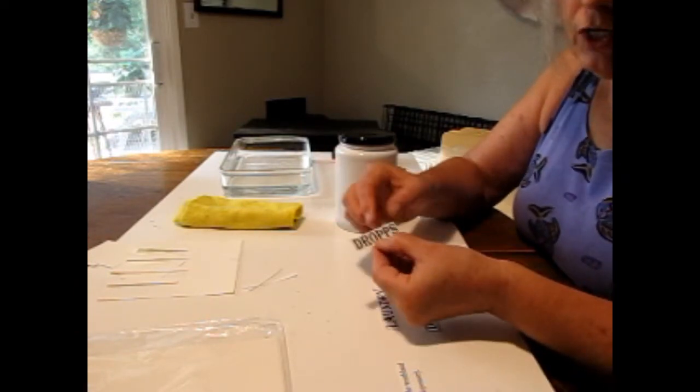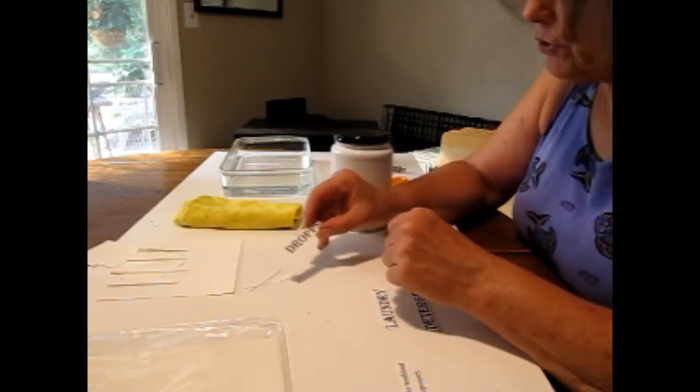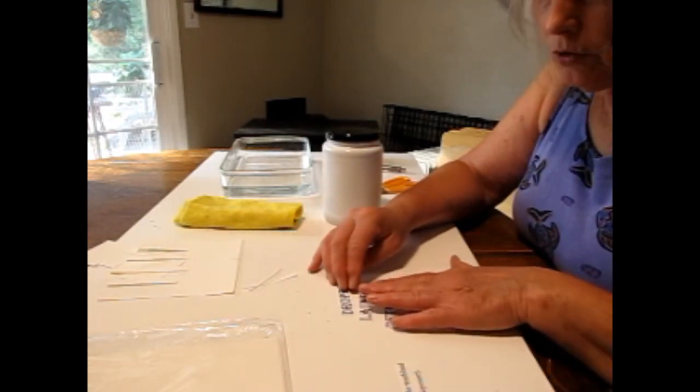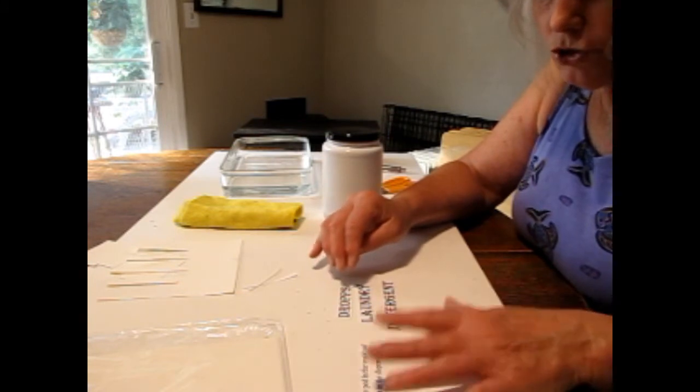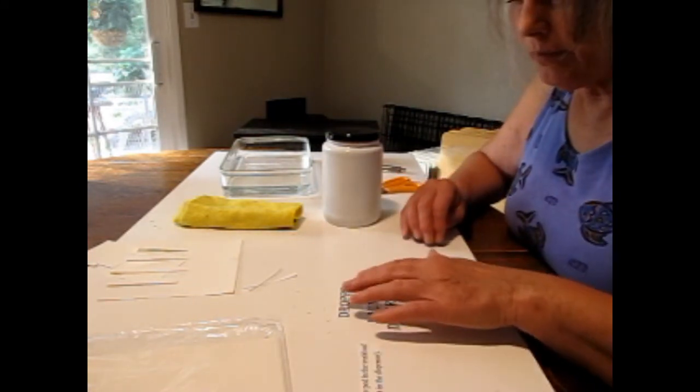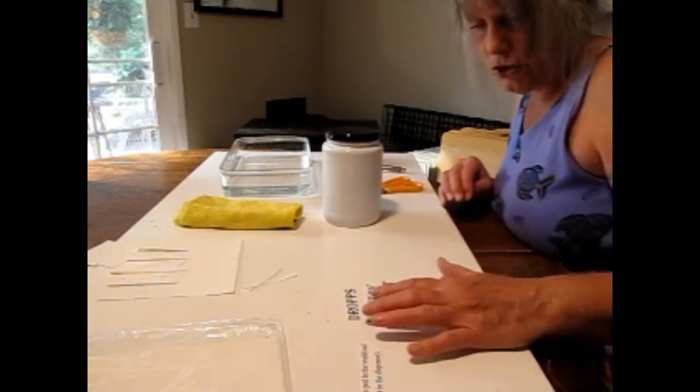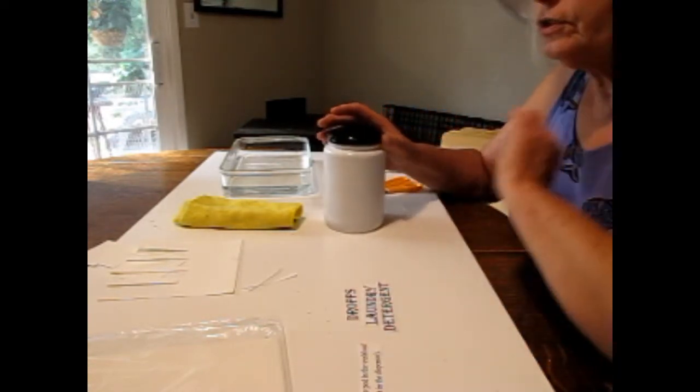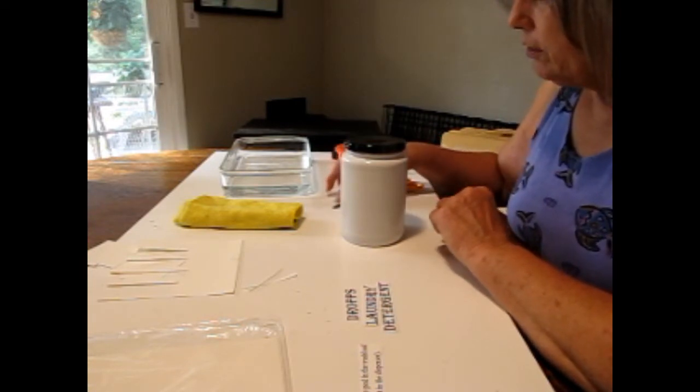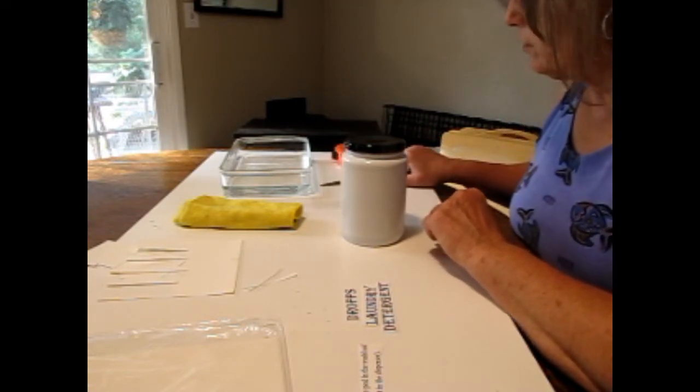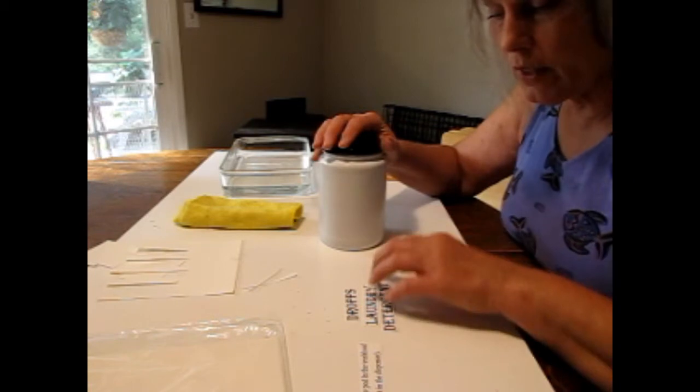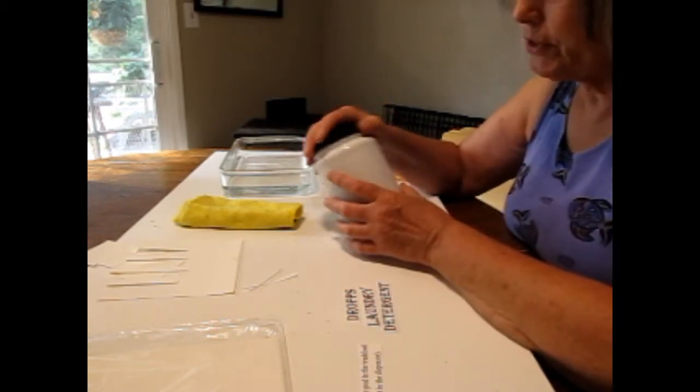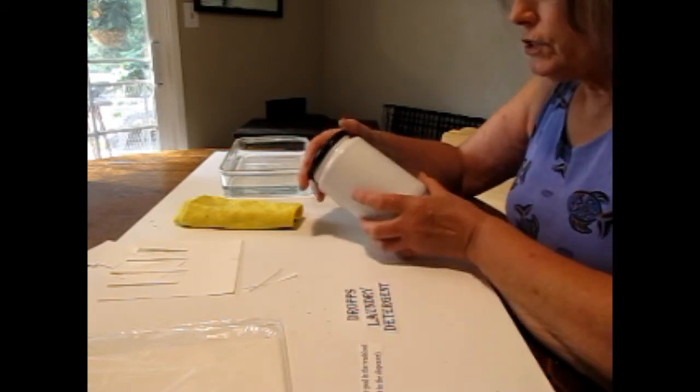I'm just making a label for this jar with the instructions. I use Dropps laundry detergent. It comes in these little pods that you throw in the wash load, don't have to deal with plastic bottles. So I just thought rather than having it sitting there in a cardboard box I would do this with the pickle jar.